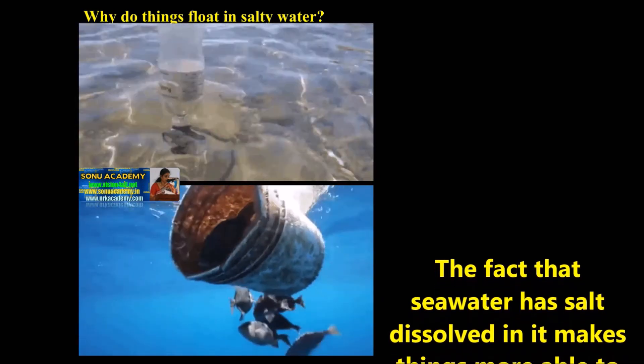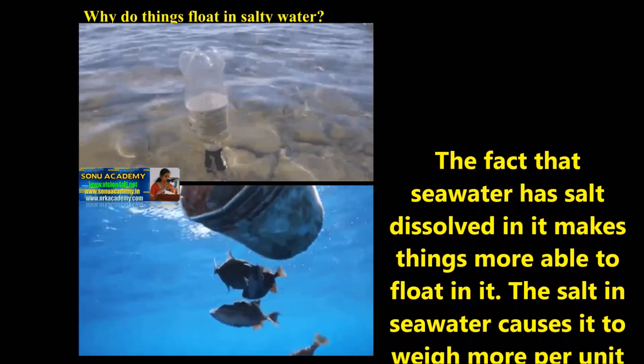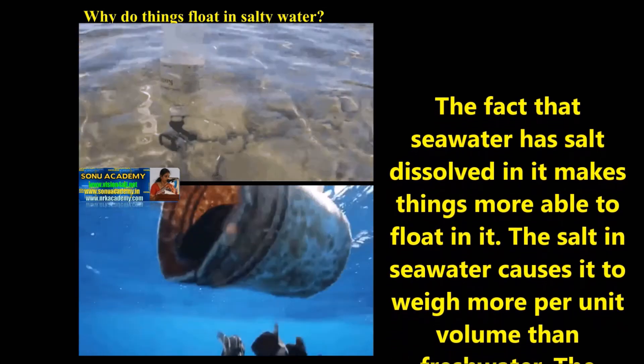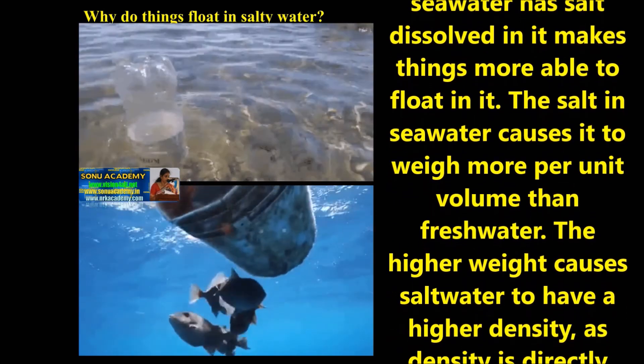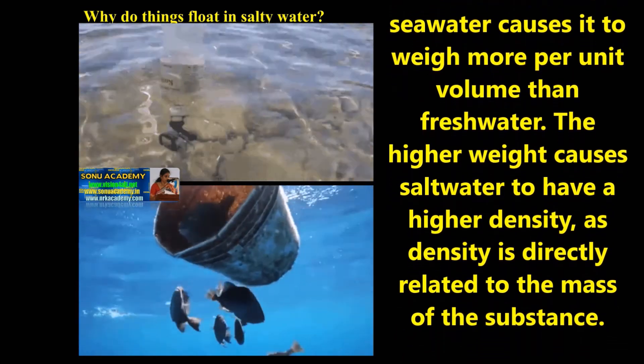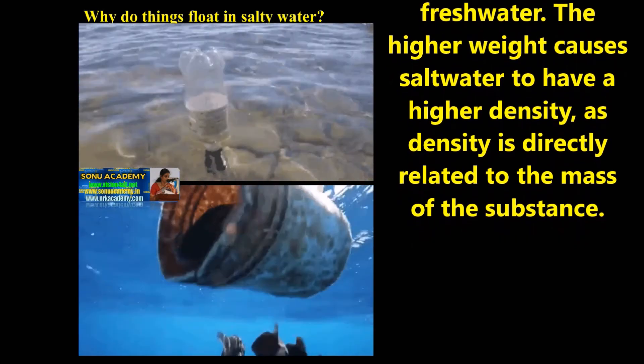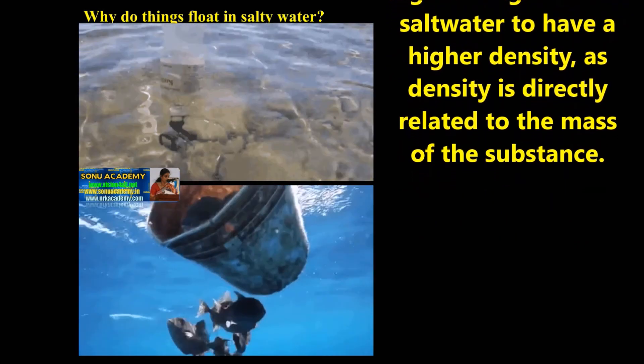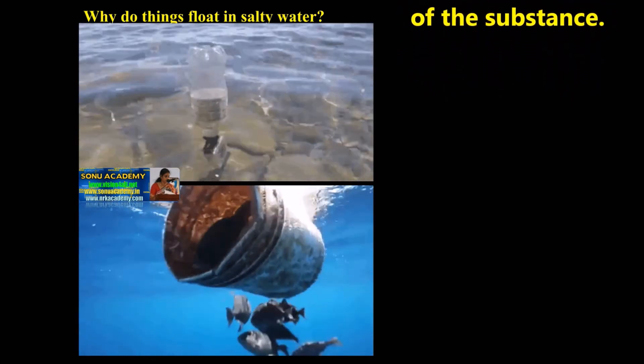Children, now let us discuss why things float in salt water. The fact that seawater has salt dissolved in it makes things more able to float in it. The salt in seawater causes it to weigh more per unit volume than fresh water. The higher weight causes salt water to have a higher density, as density is directly related to the mass of the substance. Because of this reason, things float in salt water.